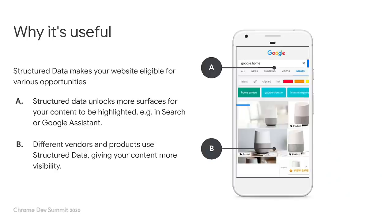So if you're wondering why you should add this machine-readable semantic data in the first place, you might have actually seen some of the things that are powered by it. Many different vendors, including Google, use this information to highlight your web content in many places it would otherwise not show up. Let me give you a few examples just from Google's side of things.